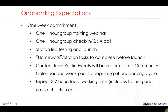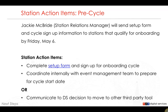Pre-cycle: Jackie McBride will be sending a setup form and cycle sign-up information to all qualifying stations — those using Core Publisher and Public Events — by Friday, May 6th. Complete the setup form and sign up for a cycle; it's first come, first served. Coordinate internally with your event management team, especially if staff who aren't usually in Core Publisher will need user access before your cycle starts. If you decide Community Calendar isn't right for you, let us know your decision to move to a third-party tool.